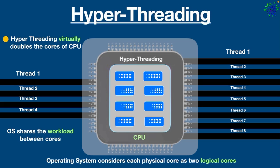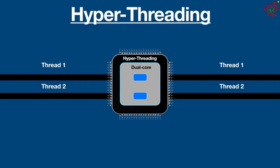The main function of hyper-threading is to increase the number of independent instructions in the pipeline. Performance of the CPU depends on the type of workload you throw at it. If the workload consists of processes that have threads that cannot run in parallel, hyper-threading won't make much of a difference. However, hyper-threading is suitable when the workload requires heavy processing of tasks that go in parallel.